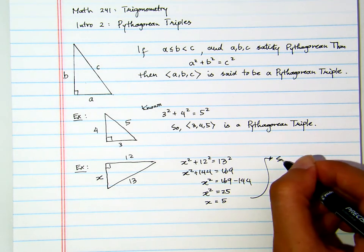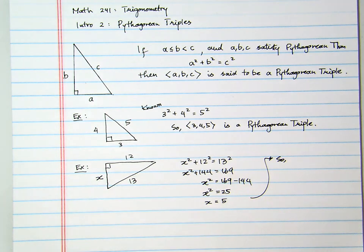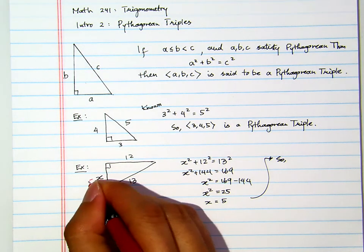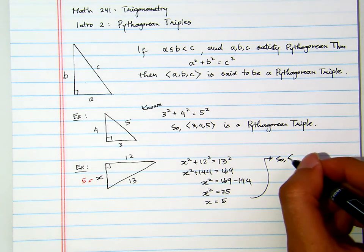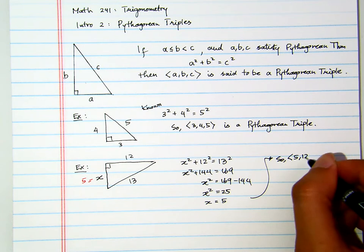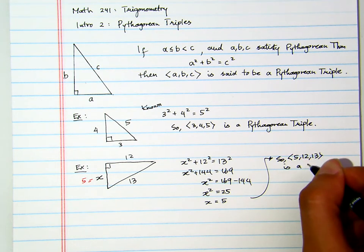Now, from there, we say, 5 is the smallest. 5 is the smallest and 13 is the largest. So, we write it this way: 5, 12, 13 is a Pythagorean Triple.